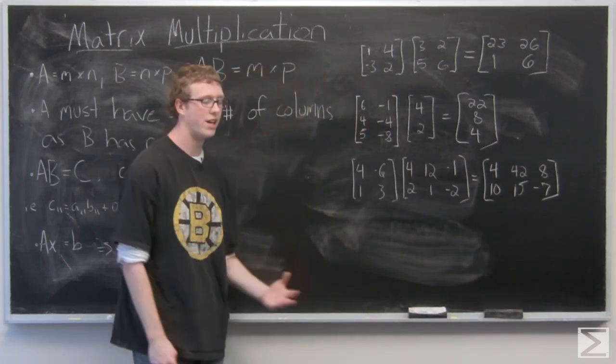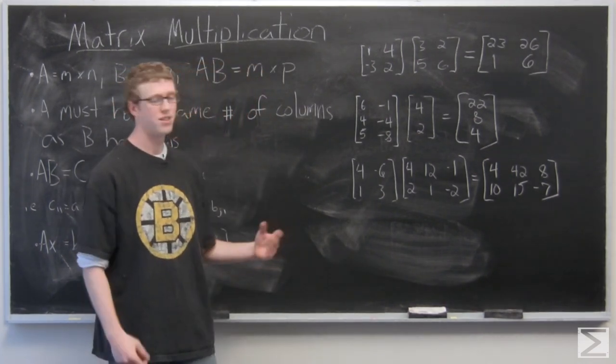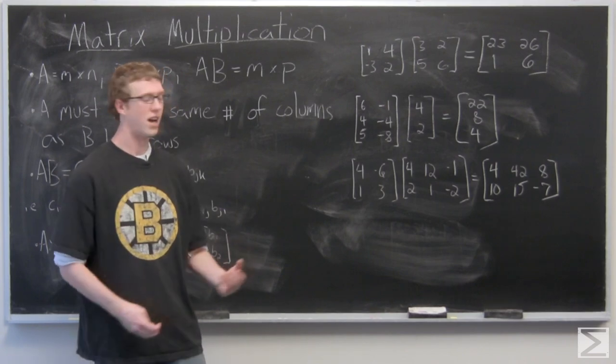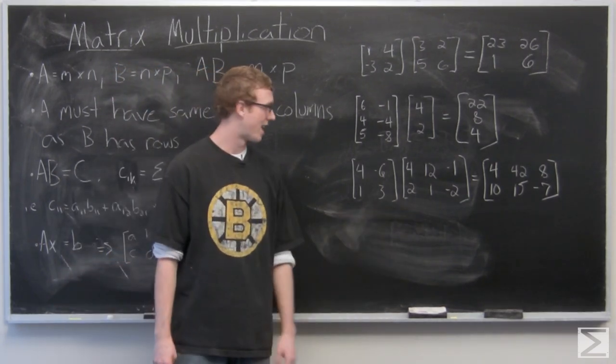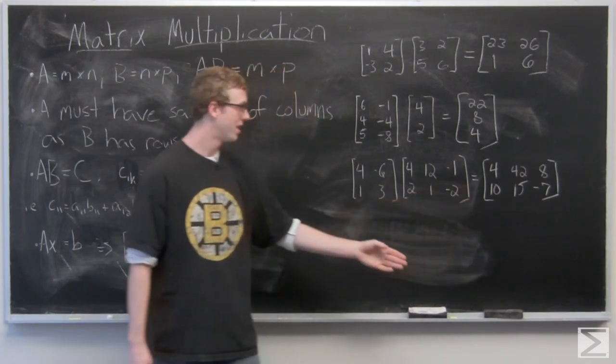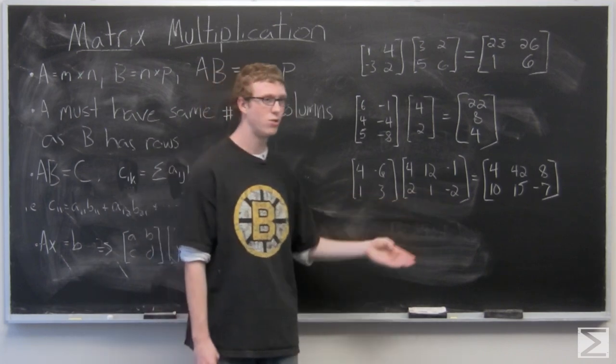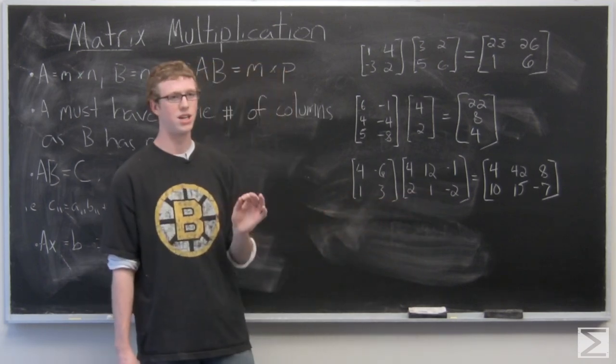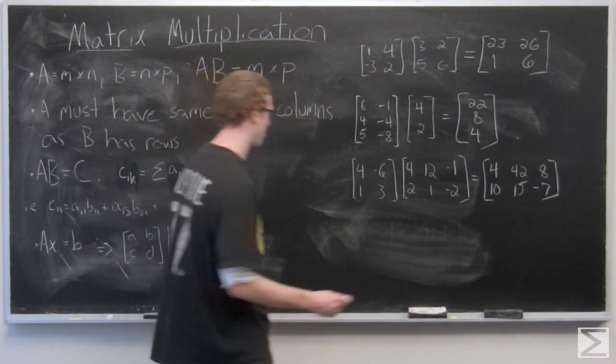So just one last quick note, let's notice that AB doesn't equal BA in most cases with matrix multiplication. Just looking at this last example, we have a 2 by 2 and a 2 by 3. If you tried to multiply the 2 by 3 times the 2 by 2, you would get 2 by 3 and 2 by 2, so you can't actually multiply those matrices together.